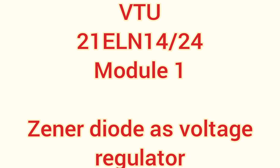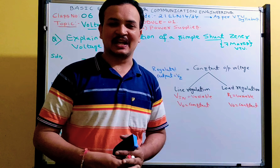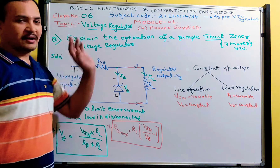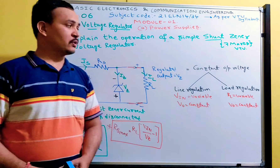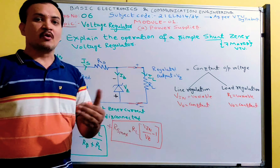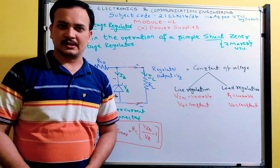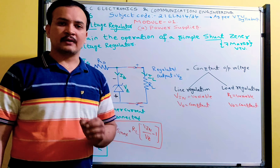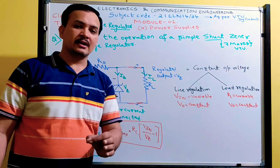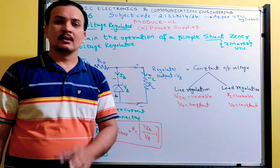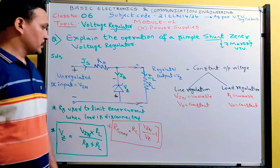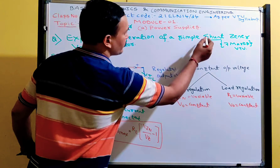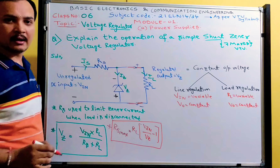Hi friends, welcome to Shiva's Side for You Basic Electronics YouTube channel. Today's topic is voltage regulator concept. I am achieving constant output voltage for any variation in input voltages with the help of a zener diode. So we can use a zener diode as a voltage regulator. Based on this topic, the question they can ask is: explain the operation of a simple shunt zener voltage regulator.